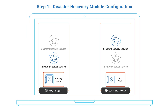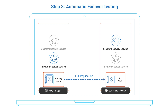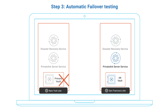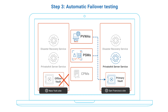In the first step of the exercise, we will configure the disaster recovery service on the DR server in San Francisco to perform an automatic failover in case the primary vault in New York is no longer reachable. In the second step, we will trigger a full replication of data from the primary vault in New York to the DR vault in San Francisco. In the third step, after confirming that the full replication of data has been successfully completed, we will trigger an automatic failover by stopping the Private ARK server service on the primary vault. We will confirm the Private ARK server was successfully started on the DR vault.